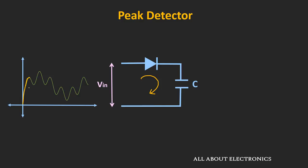After reaching the peak value, the input signal starts reducing. At that time, this diode will get reverse biased because the voltage at the anode is less than the voltage at the cathode terminal. During that time, the capacitor will hold the peak value of the input signal. This diode will again start conducting whenever the input signal crosses the previous peak voltage. Up to that point, the capacitor will hold the voltage, and once this diode becomes forward biased, this capacitor will get charged up to the new peak value. After reaching the peak value, even if the input signal reduces, this capacitor will hold the peak value. This is how this circuit detects the peak voltage.